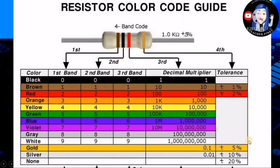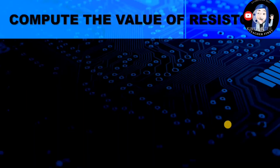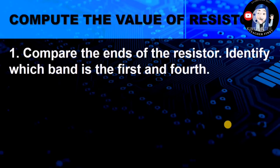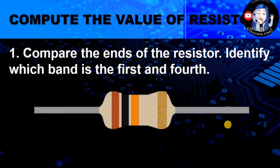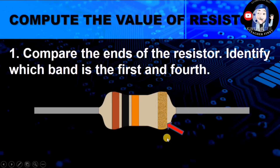I hope you have memorized and mastered the color coding chart. Let's go straight to computing the resistance value. Here are the steps. The first one: compare the ends of the resistor and identify which band is the first and the fourth.